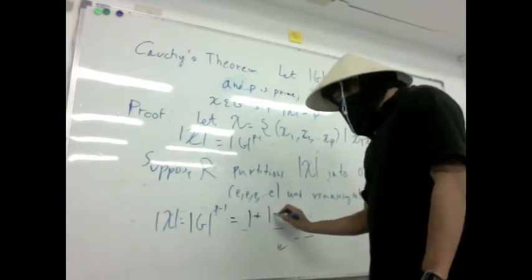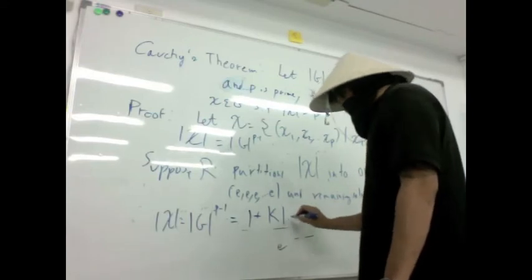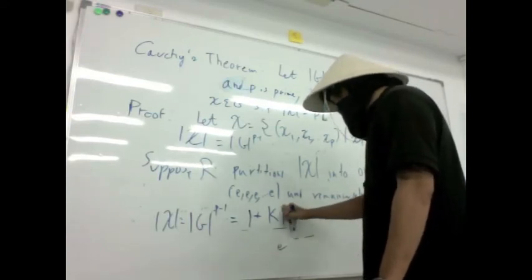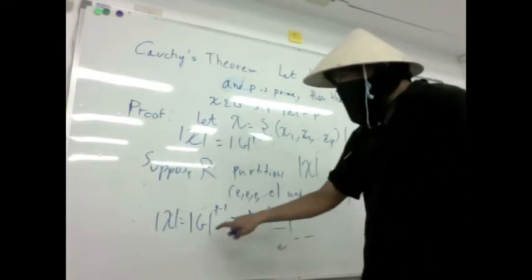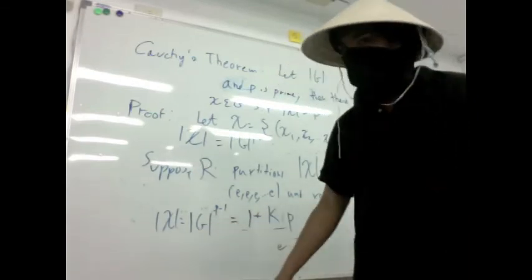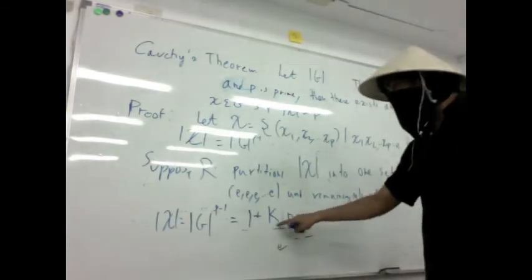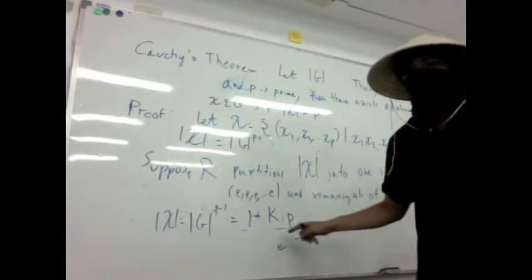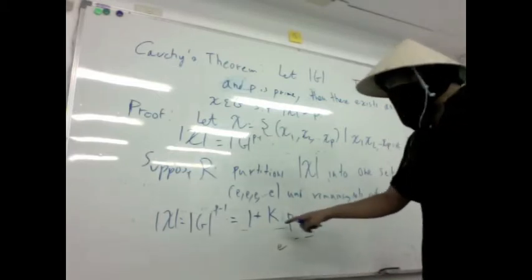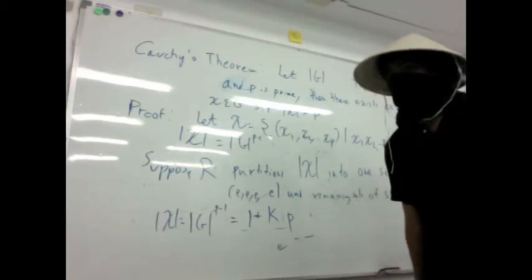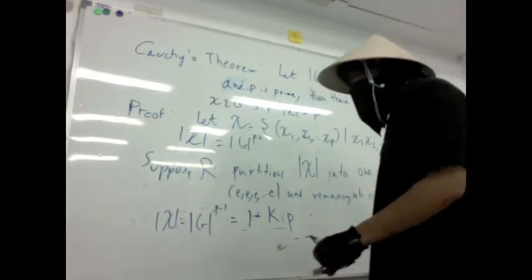Size of one for this set plus k something is true times p times yeah. But notice here p divides this thing, right? But p does not divide one plus kp, because k is an integer and one divides kp. So we have contradiction.